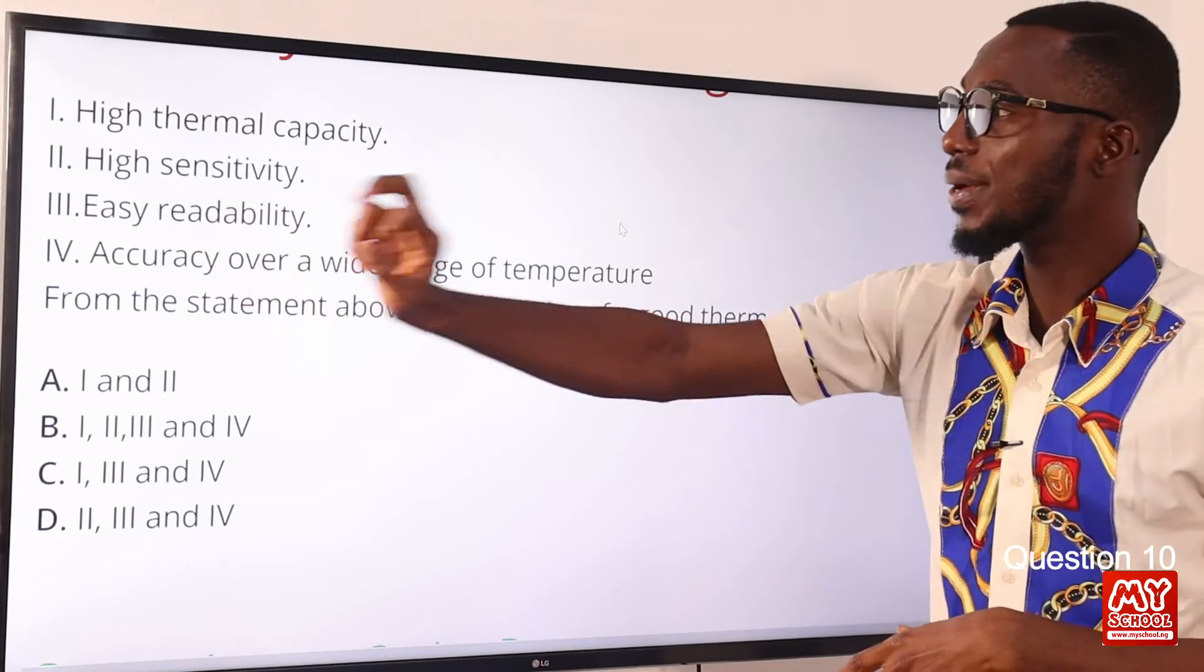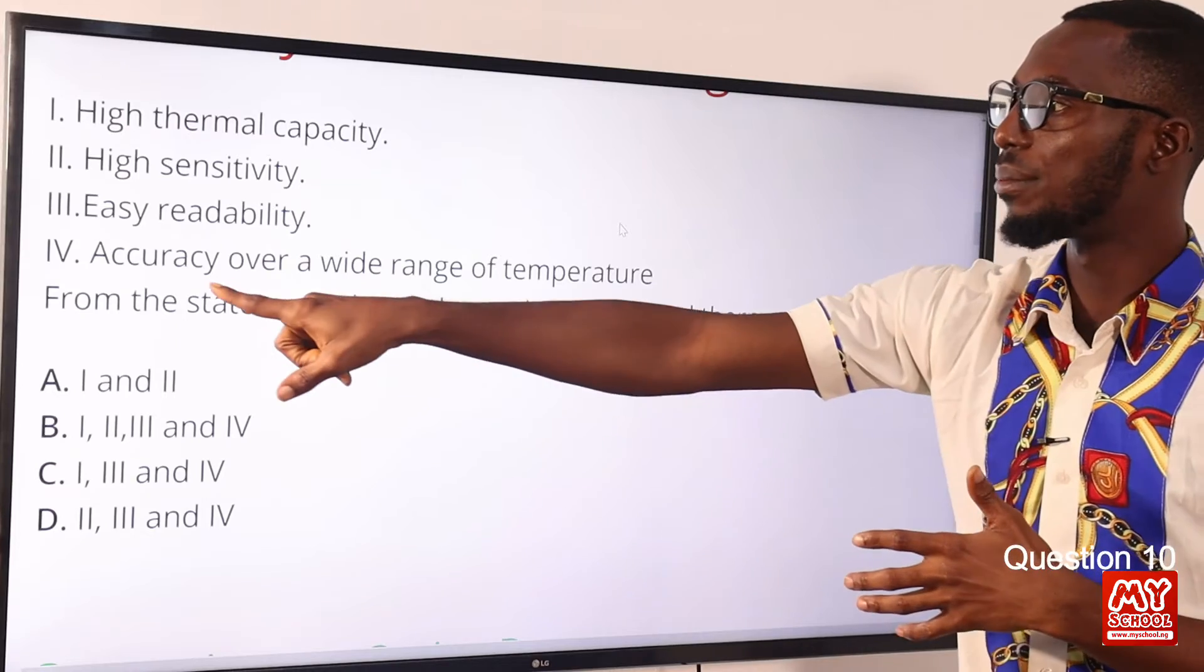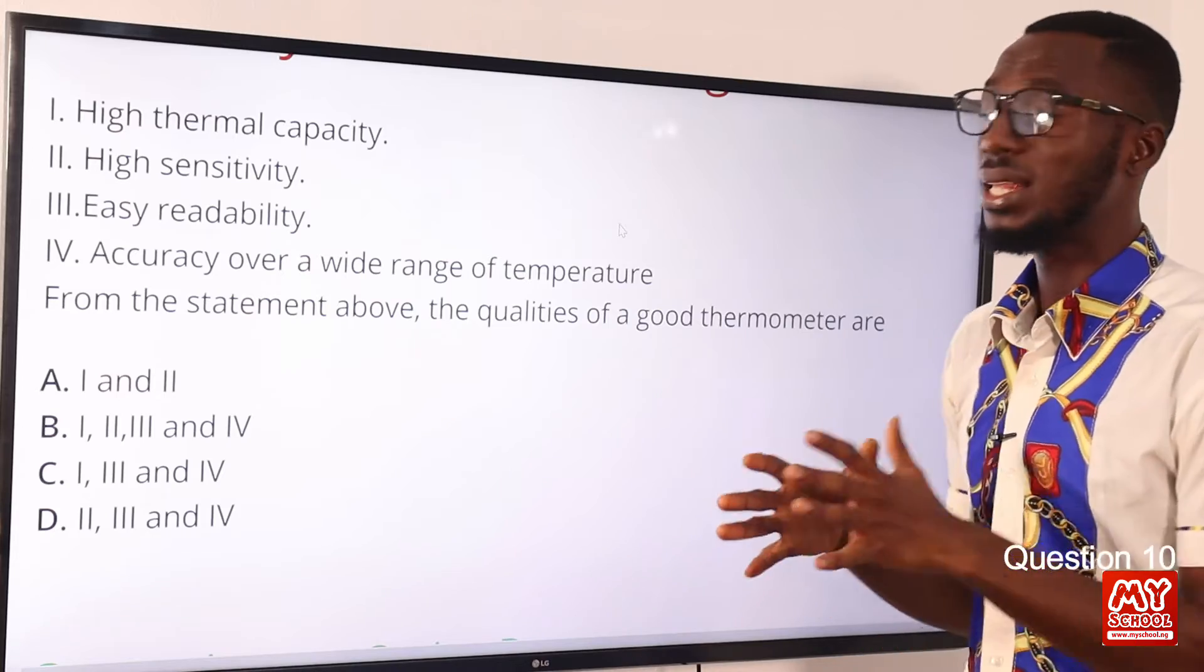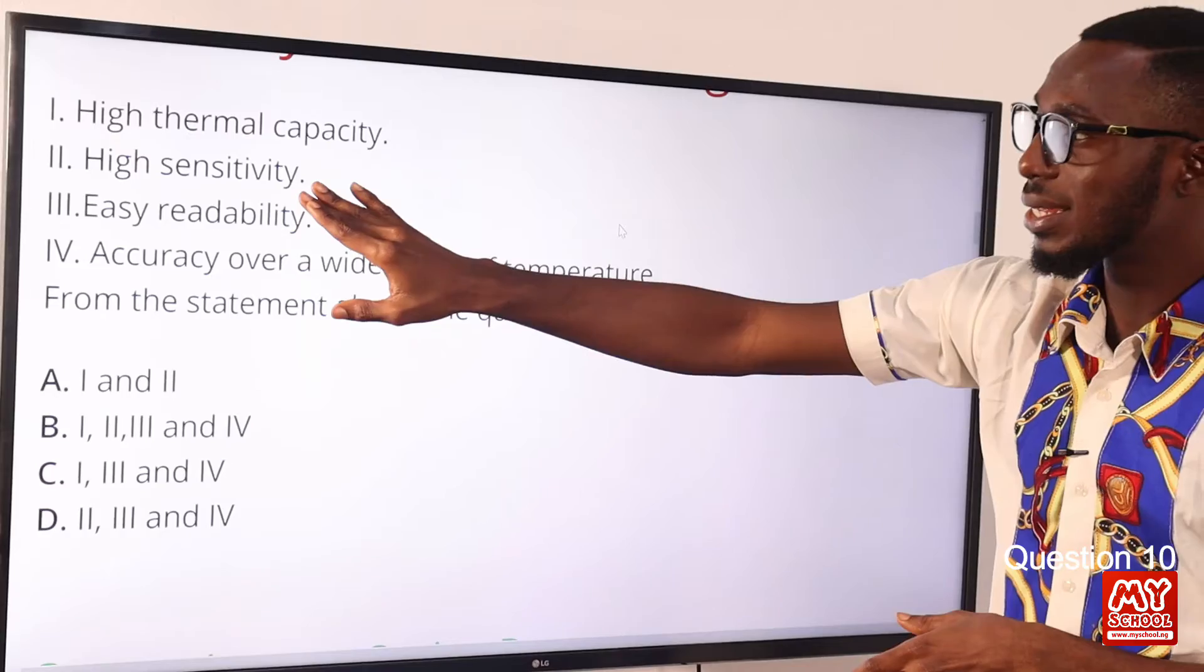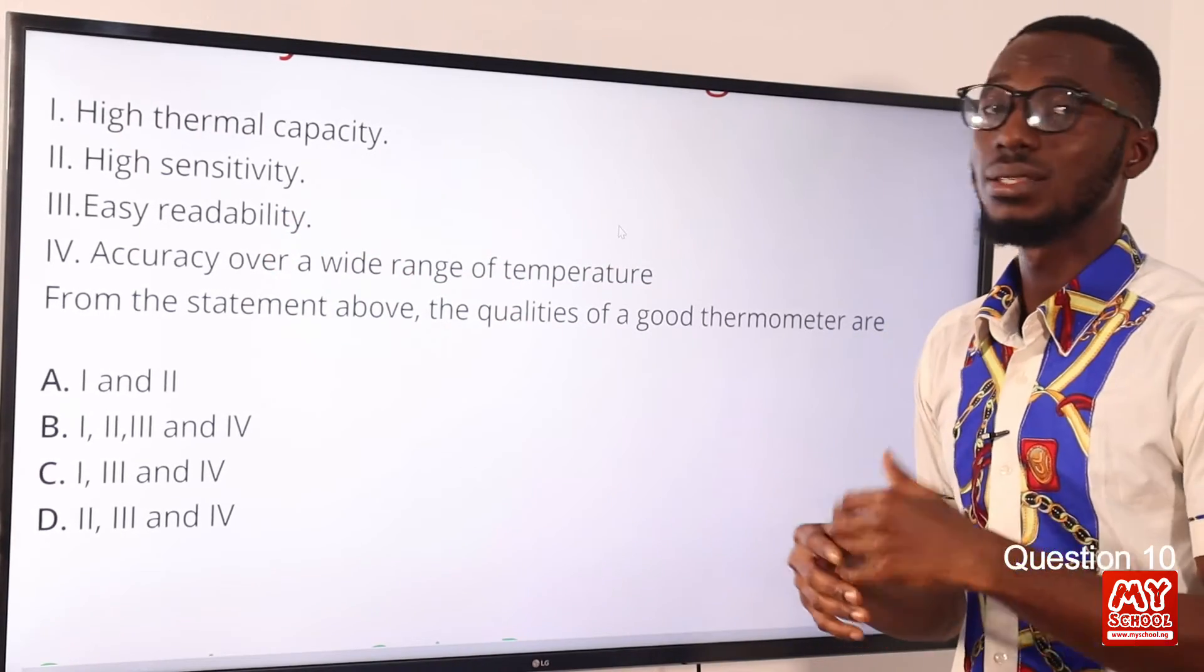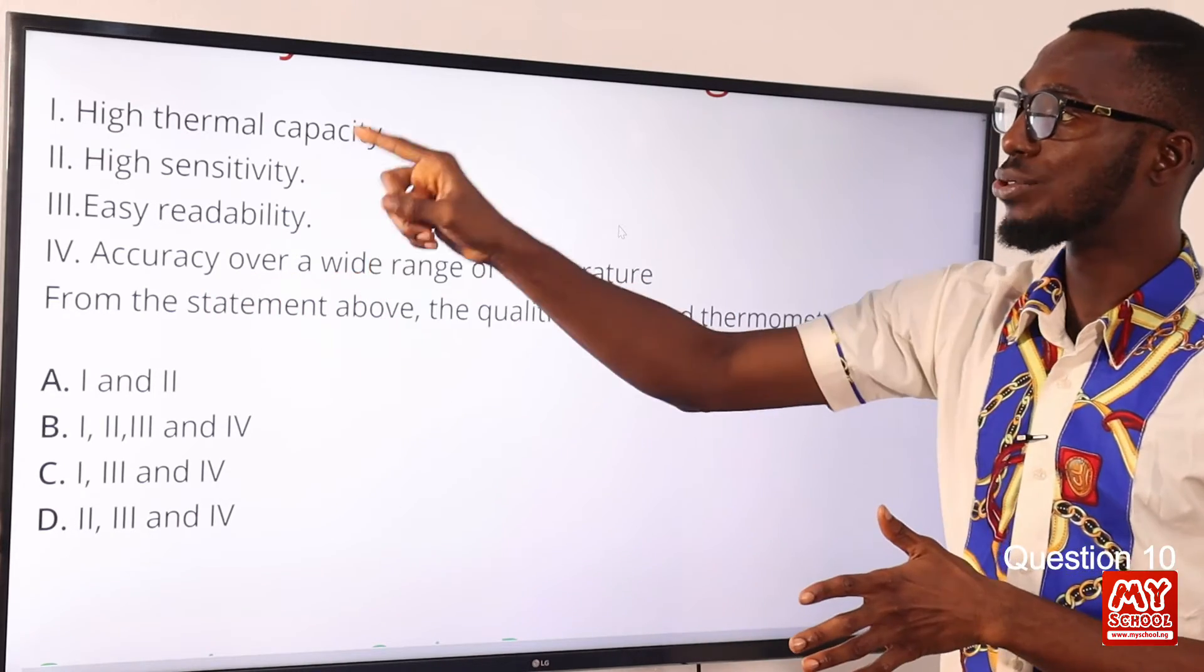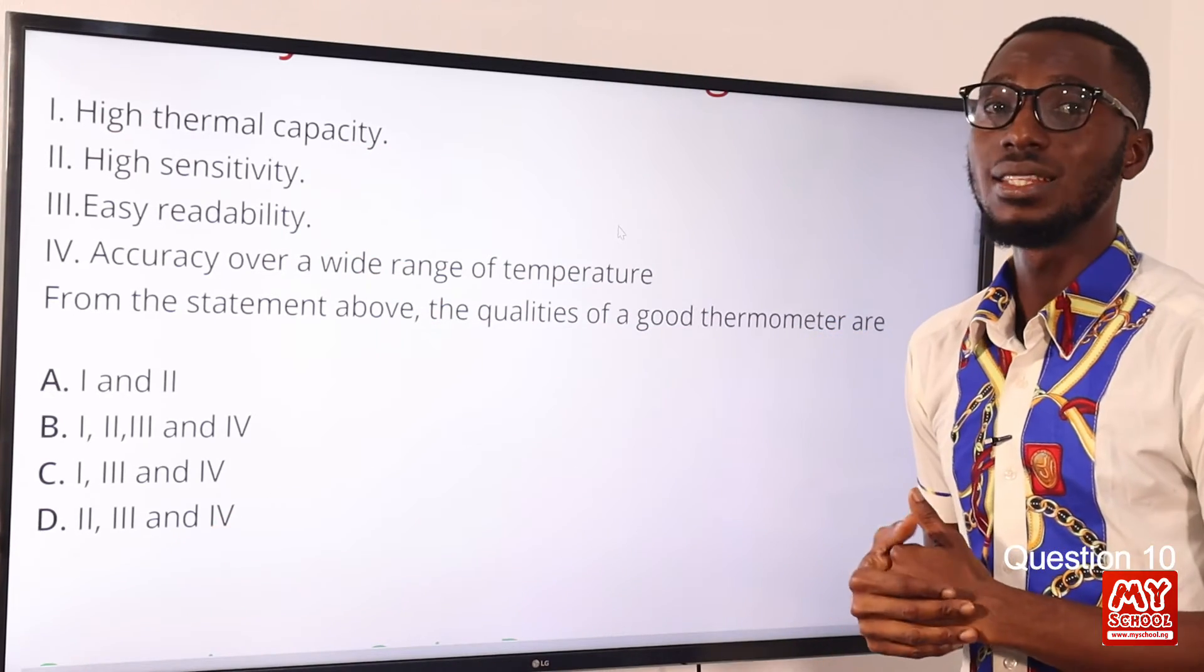So we have statement 3, easy readability. It should be easy to read. So we have 4, accuracy over a wide range of temperature, especially when you consider the thermoelectric thermometer. It can measure very high temperature. So these are the things we are looking for: high sensitivity to temperature change, easy readability so that you can take temperature measurements correctly, then accuracy over a wide range of temperature. This is equally important. So we have statements 2, 3 and 4, they are correct. So that is found in option D. So option D is the correct option.